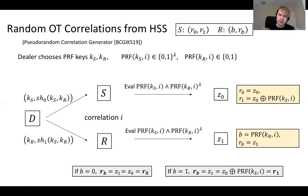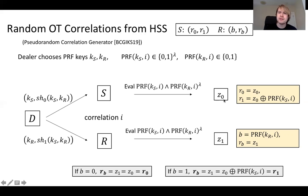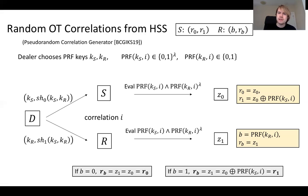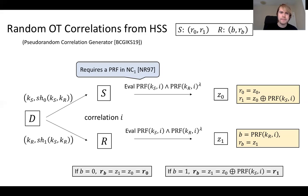For any index i in a potentially exponential-size range, the parties can do this HSS evaluation and derive random OT correlations. Out of a very small dealer message — which just consists of shares of PRF keys — they can produce potentially exponentially many random OT correlations.